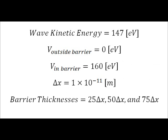These are the parameters for the following three simulations. Each one shows a different barrier thickness, with the first one being 25 delta x, the second 50 delta x, and the third 75 delta x. In the simulation shown previously, we would not see any difference between these thicknesses if the barrier height is constant. However, in regards to gate oxide, the barrier thickness should cause an exponential decrease in the probability of tunneling. Now here are the simulations.